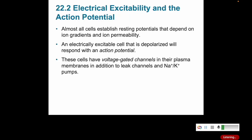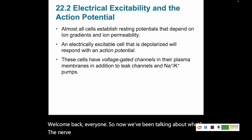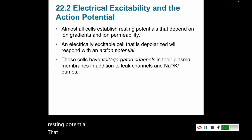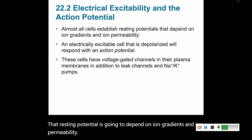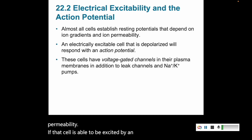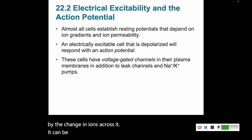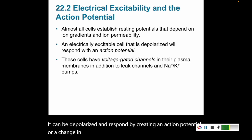Welcome back everyone. We've been talking about what the nerve cell is, its anatomy, and how cells maintain a resting potential. That resting potential depends on ion gradients and ion permeability. If a cell is excited by an electrical current or by a change in ions across it, it can be depolarized and respond by creating an action potential — a change in charges across the membrane that makes it act and do something.